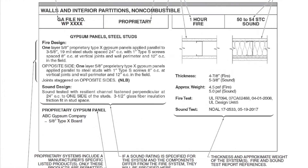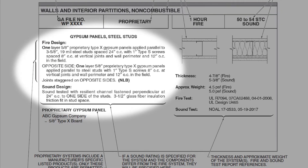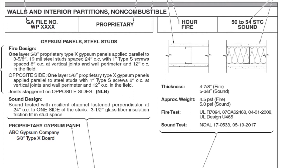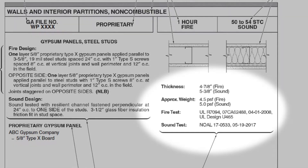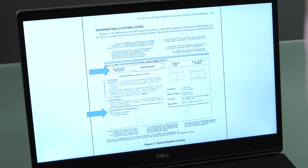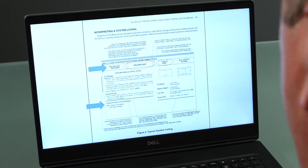Substitution of other materials or deviation from specified construction could adversely affect performance. GA600 system descriptions are summaries — review the test report for complete information on the system or components tested. Information regarding generic systems may be requested from the Gypsum Association.